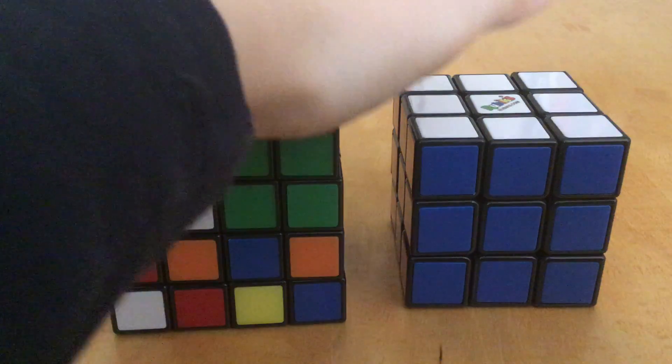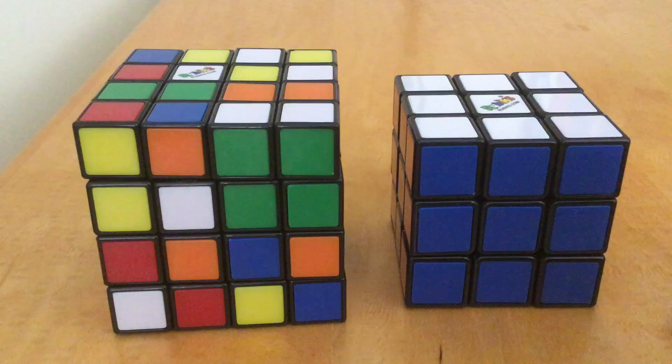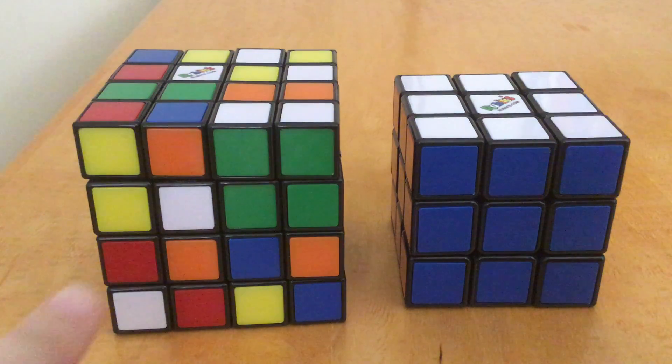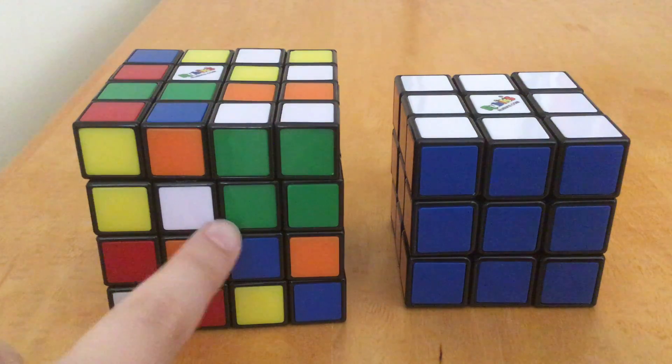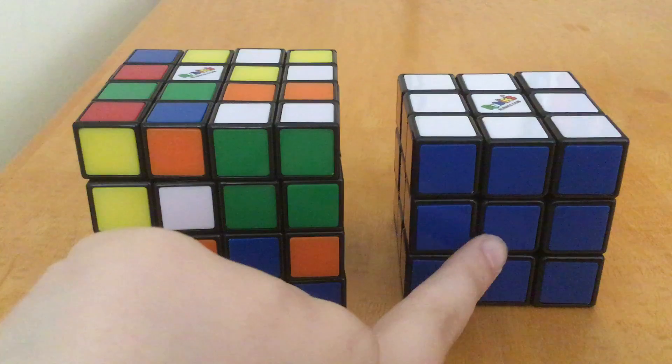You will see I have a scrambled 4x4 in front of me and a 3x3 Rubik's Cube in front of me. Now these cubes are very different because the 4x4 has centers that you need to create and on the 3x3 they're already created for you.